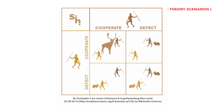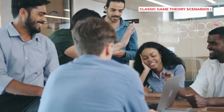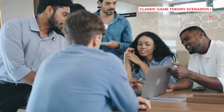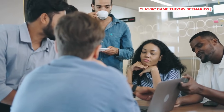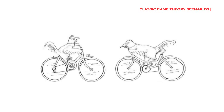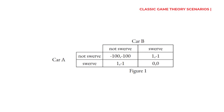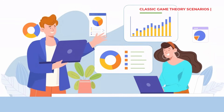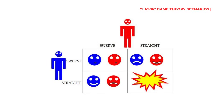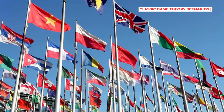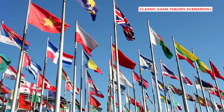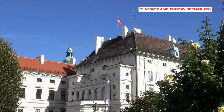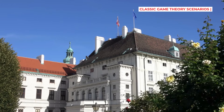The Stag Hunt explains why some teams create amazing things while others fall apart. In the Chicken Game, two drivers speed toward each other. Whoever swerves first is the chicken and loses face, but if neither swerves — crash. Sometimes appearing crazy is strategic. If your opponent thinks you definitely won't swerve, they probably will. This terrifying game plays out in business rivalries and international relations, where leaders make dangerous threats hoping the other side backs down first.